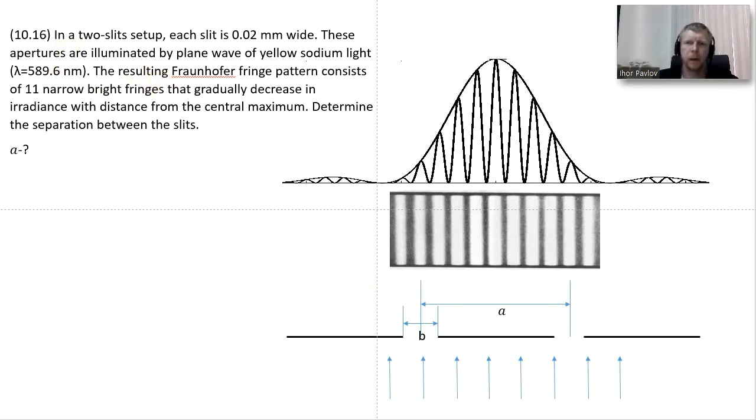This aperture is illuminated by plane wave of yellow light, 589.6 nanometers, and it says that the resulting Fraunhofer fringe pattern consists of 11 narrow bright fringes that gradually decrease in irradiance with distance from the center.